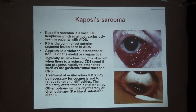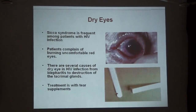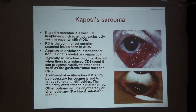Kaposi's sarcoma is a vascular neoplasm almost exclusively seen in HIV patients. It is one of the commonest anterior segment lesions in AIDS patients. They appear as typically violaceous, non-tender nodules which can affect the eyelid or the conjunctiva. If CD4 counts are low, it can progress to the gastrointestinal tract or CNS. Treatment is usually required for cosmesis or to relieve functional difficulties, and the mainstream of treatment is radiotherapy, chemotherapy, or prior therapy for localized lesions.